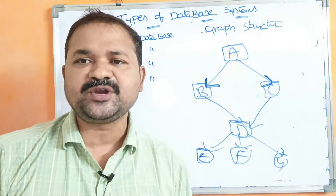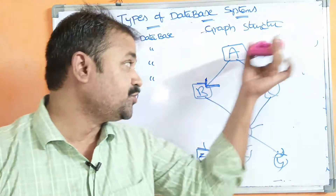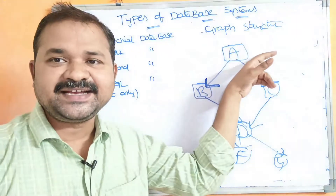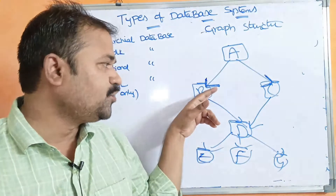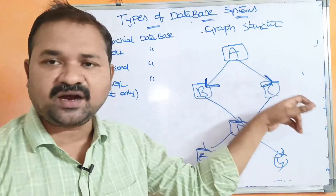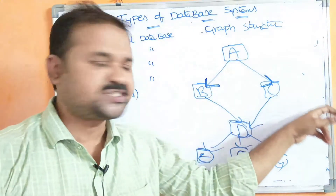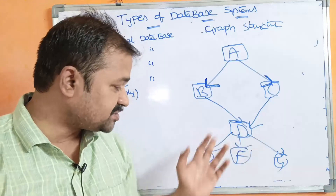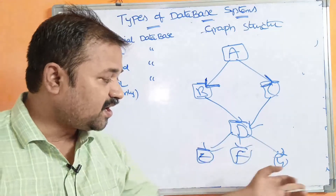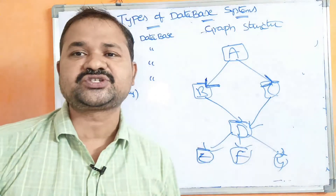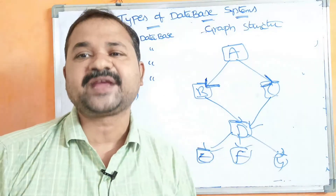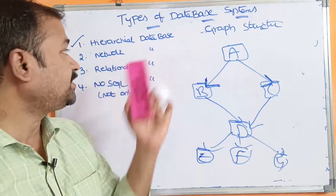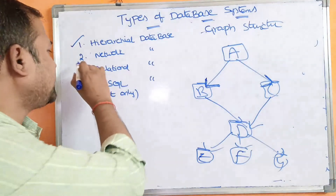Here also, data is stored in the nodes — node A contains a record, node B stores a record, node C stores a record, node D stores a record. All nodes store some records. This is about network databases.